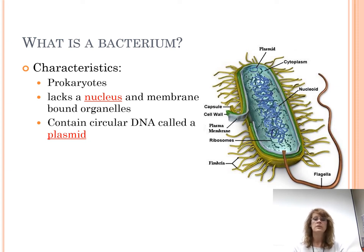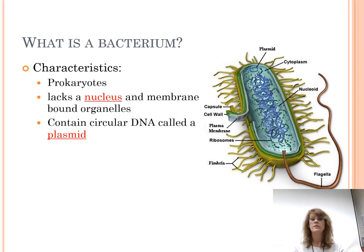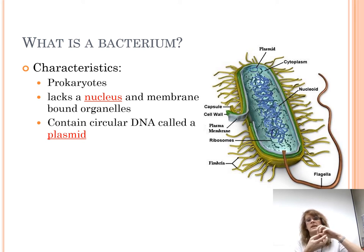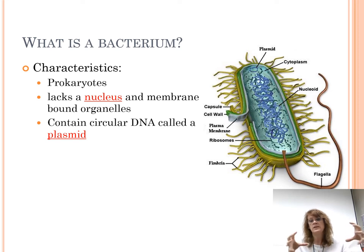Bacteria don't have membrane-bound organelles — no Golgi body, no endoplasmic reticulum. They do have ribosomes because they have to make proteins. Their DNA is one piece, often in a circle. It might be twisted up to look like a bowl of spaghetti, but if you could unwind it, it would actually be one circle. A lot of times this is called a plasmid.